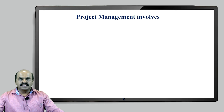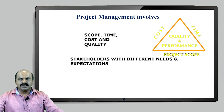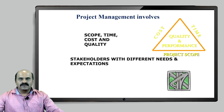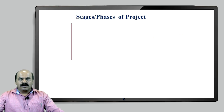We have seen how project management has evolved — that has already been covered. What we are going to see today are the various stakeholders with different needs and expectations. Scope, time, cost, and quality are the basic characteristics of a project.